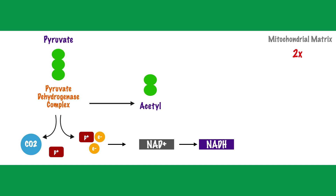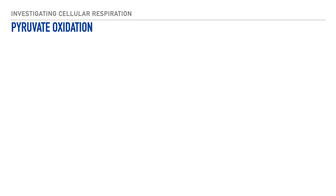What remains is a two-carbon structure called an acetyl group. A coenzyme A molecule attaches to it, serving as a vehicle to transport the acetyl group into the citric acid cycle. Collectively, we call this newly formed structure acetyl coenzyme A.